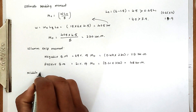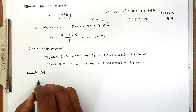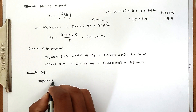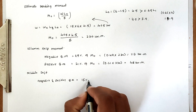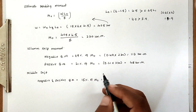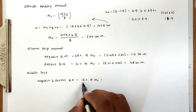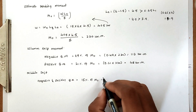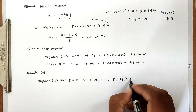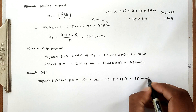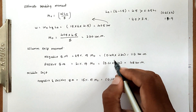For the middle strip, both negative and positive bending moments are equal at 15% of M0. The distribution totals 100%: 49 plus 21 equals 70 for column strip, plus 15 plus 15 equals 100. Middle strip moment equals 0.15 into 230 equals 35 kN·m.